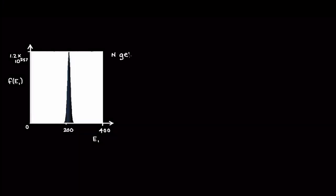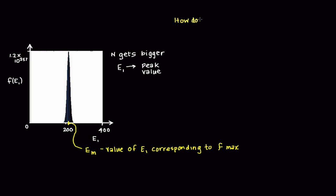Statistically, this means as the number of particles becomes larger, the energy in box 1 is almost always very close to this peak value. Let's define Em to be the box 1 energy corresponding to the peak value of F. So, how do we find Em?